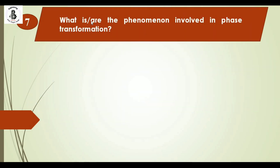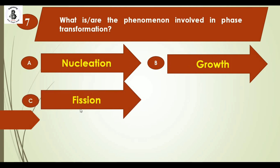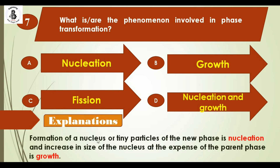Question 7: What is the phenomenon involved in a phase transformation? Option A: nucleation, Option B: growth, Option C: fission, Option D: nucleation and growth. The formation of tiny particles of the new phase is nucleation, and increasing the size of those nuclei at the expense of the parent phase is growth. The right answer is option D: nucleation and growth.